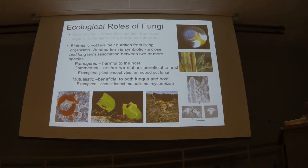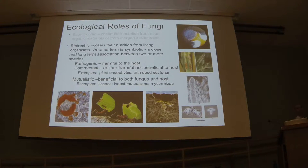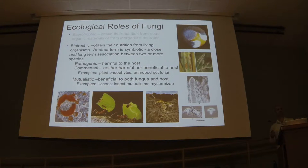We also have key examples of mutualisms, where the association between a fungus and another living organism benefits the fitness of one or both partners. Lichens are a great example: those algae don't live without their fungal symbionts, and those fungi don't live without their algal symbionts, but together they thrive in some of the most hostile places on Earth. We also have insect mutualisms, especially insects that feed on very oligotrophic or nutrient-poor substrates, such as insects that tap into plant sap.